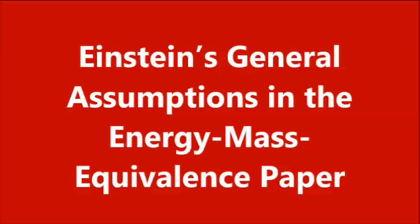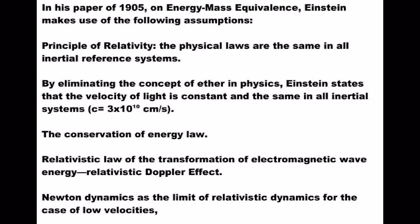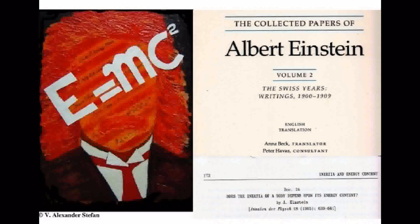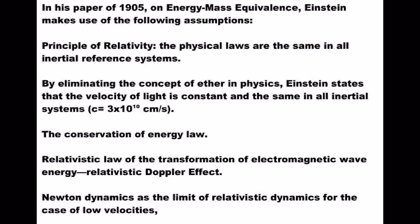Einstein's general assumptions in the energy-mass equivalence paper. In his paper of 1905, Einstein makes use of the following assumptions: the principle of relativity — the physical laws are the same in all inertial reference systems. By eliminating the concept of ether in physics, Einstein states that the velocity of light is constant and the same in all inertial systems. Conservation of energy law, relativistic law of the transformation of electromagnetic wave energy, relativistic Doppler effect, Newton dynamics as the limit of relativistic dynamics for the case of low velocities.